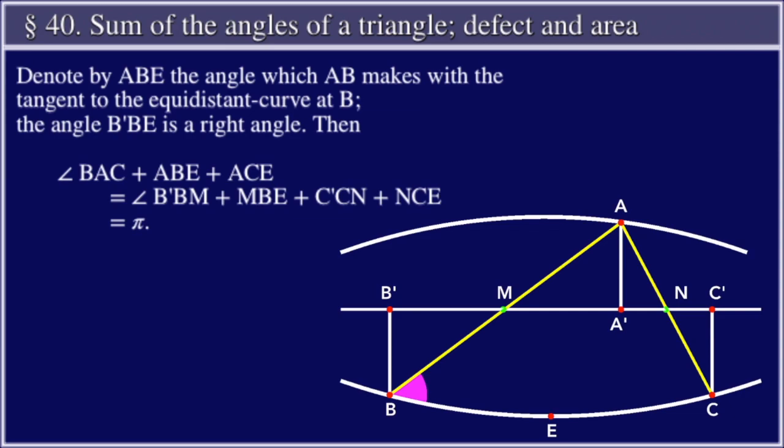Denote by ABE the angle which AB makes with the tangent to the equidistant curve at B. The angle B'BE is a right angle. Then the angle BAC plus ABE plus ACE is equal to B'BM plus MBE plus C'CN plus NCE, is equal to π.